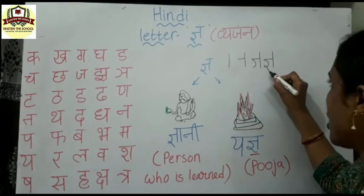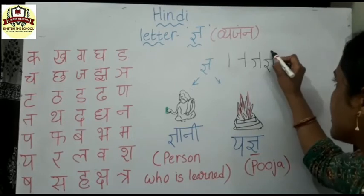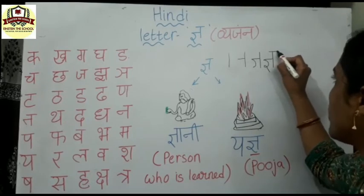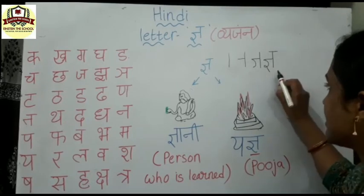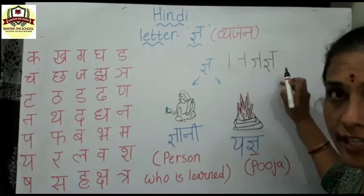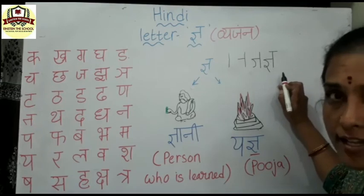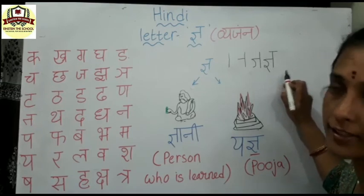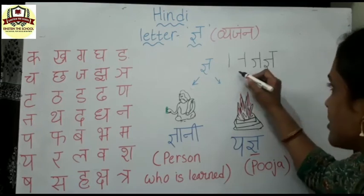Write a loop or turn and come out. Then write a sleeping line overhead. This is the letter Gna. Gna say Gnaani. Gna say Yagna.